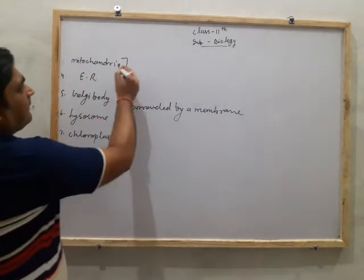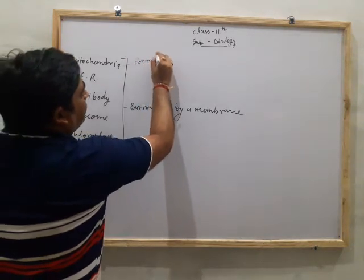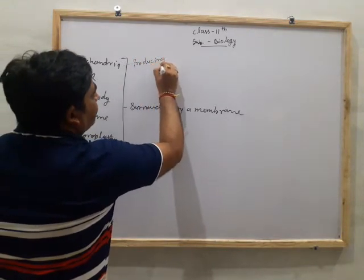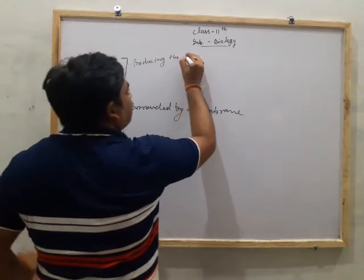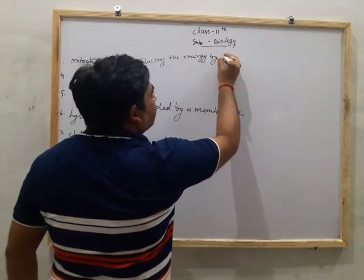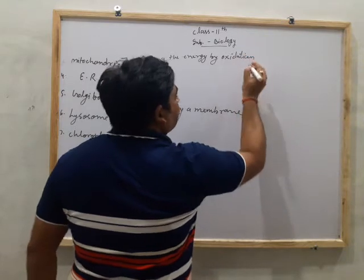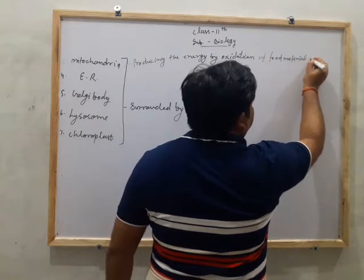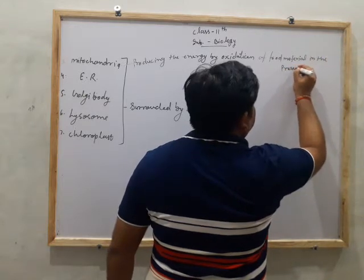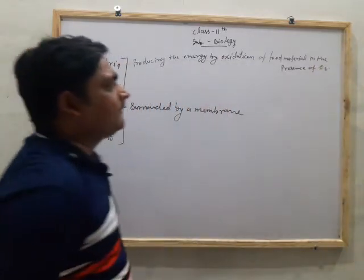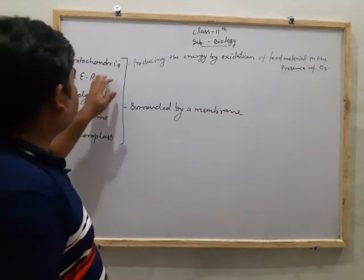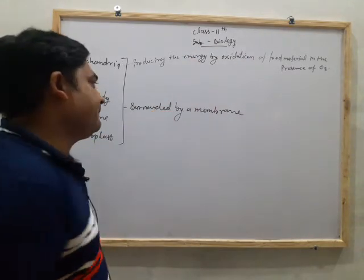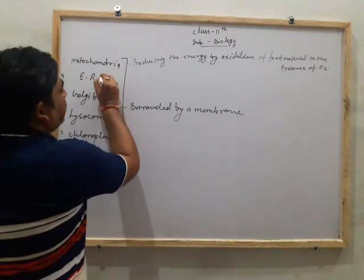What is the function of these cell organelles? Mitochondria: producing energy by the oxidation of food material in the presence of oxygen. So the function of mitochondria is producing energy by the oxidation of food material in the presence of O2.